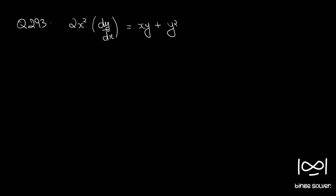Question number 293. The equation is 2x squared dy by dx is equal to xy plus y squared.